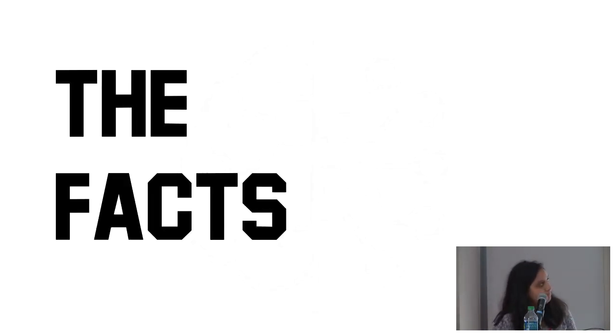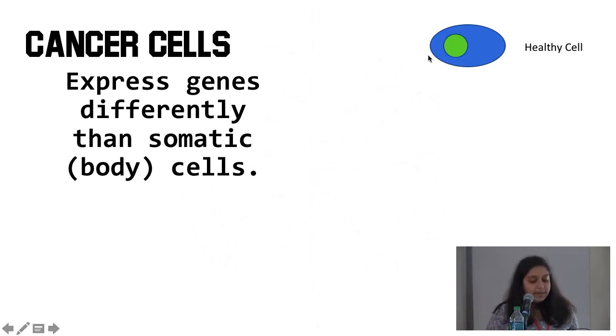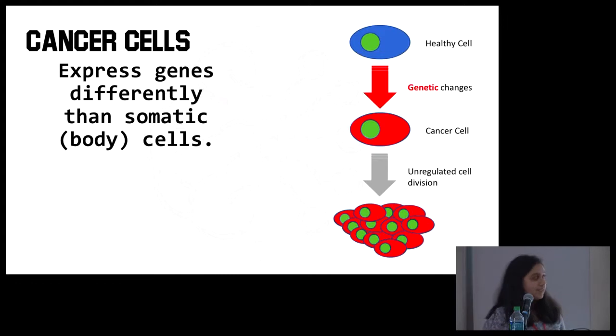Scientists have found that cancer cells express genes much differently than regular somatic cells or body cells do. This is a healthy cell, and it undergoes some genetic changes, genetic mutations to become a cancerous cell. That cancerous cell then undergoes rapid, unregulated cell division to form this cancerous tumor. The way that it expresses genes is fundamentally different than a regular healthy body cell. That offers a method that we can maybe try to classify through.